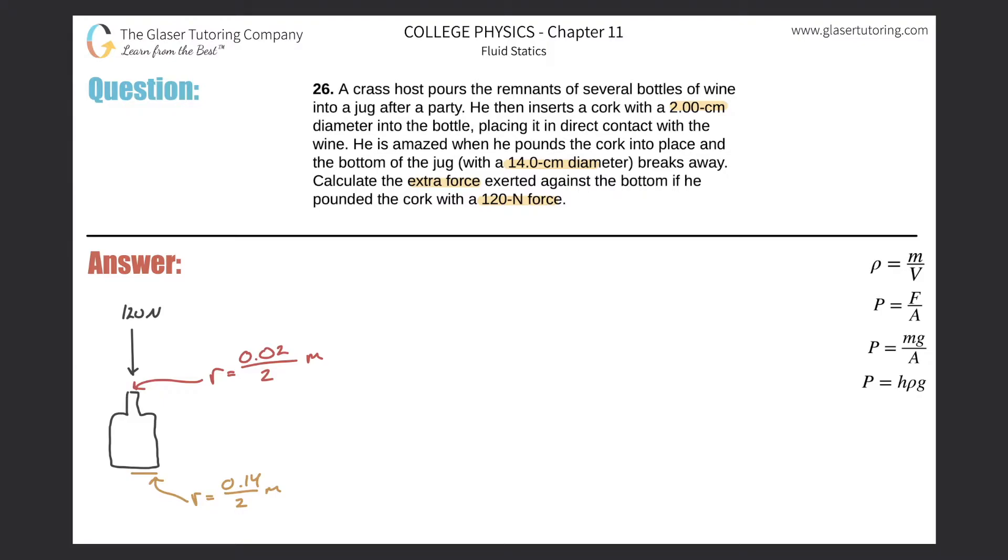The key trick part of this question is going to be this term 'extra force.' Let's just pretend that extra isn't there for right now, so it just says calculate the force that's exerted against the bottom. If that's how the problem is phrased, then this is a simple Pascal's principle problem. That states that the pressure experienced at the top of the bottle will equal the pressure at the bottom.